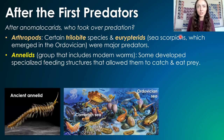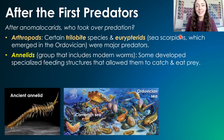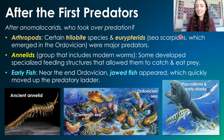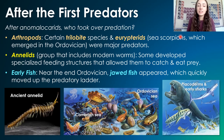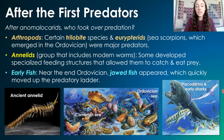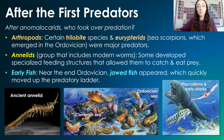One of the biggest successors, taking over kind of during and after eurypterids as apex predators, were jawed fish. Jawed fish like placoderms and early sharks evolved later in the Paleozoic and basically took over as predators of the seas from then on.